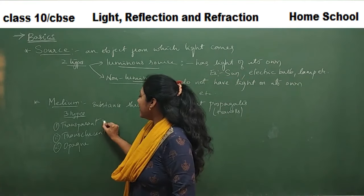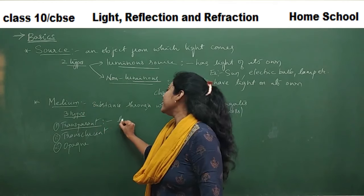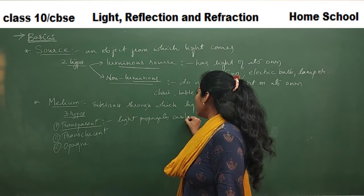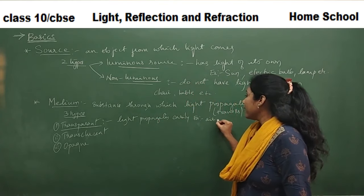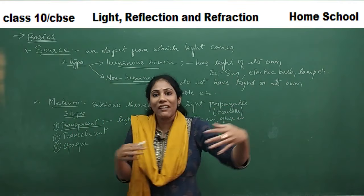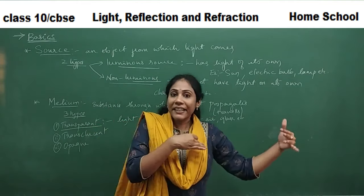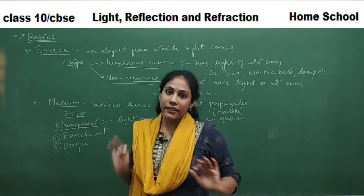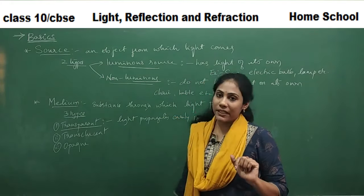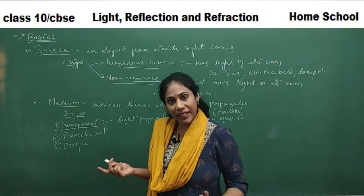A transparent medium is one through which light propagates easily — it can travel very easily. Examples are air and glass. Light from the sun travels through the atmosphere which has a lot of air, so air is a transparent medium. Even through glass, light rays can pass very easily. Such a medium through which light passes easily is called a transparent medium.